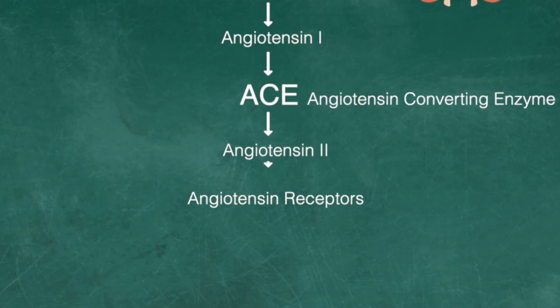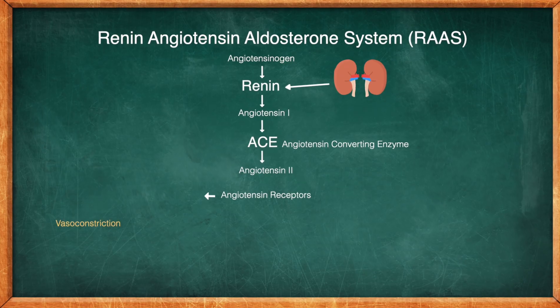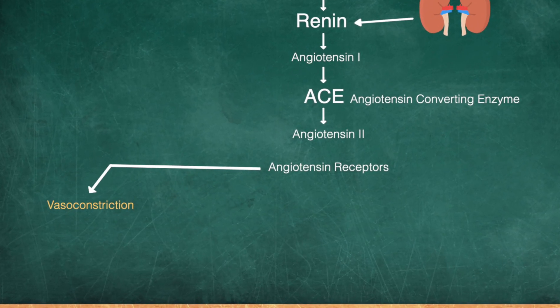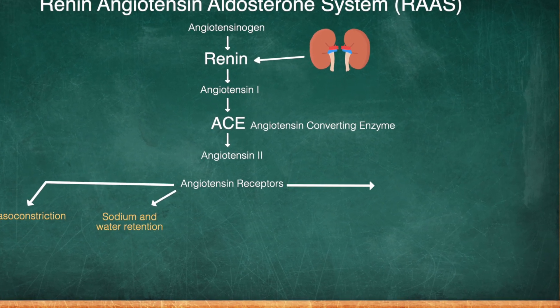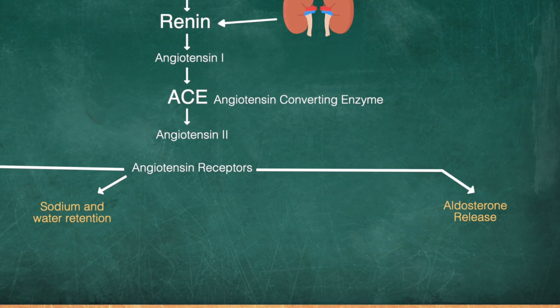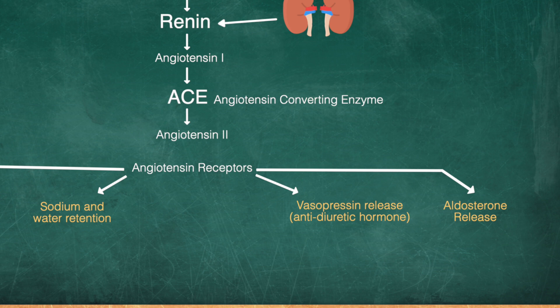Angiotensin 2 binds to our angiotensin receptors, and this is where it gets a little dicey because all these different things start to occur. We have vasoconstriction and a resulting increase in systemic vascular resistance and arterial pressure. Sodium reabsorption in the kidneys is stimulated, aldosterone is released, further sodium and water retention occurs, and we have a release of vasopressin, which is an antidiuretic hormone, further increasing fluid retention.